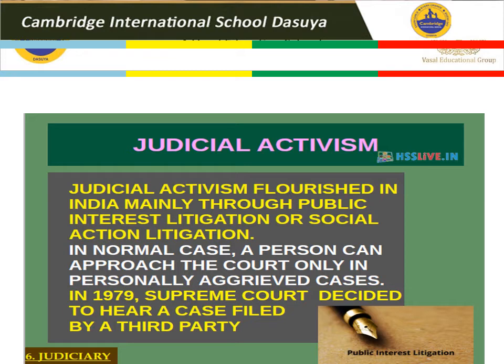What is PIL and what is SAL? You can find this topic on page number 135. In normal courts of law, an individual can approach the courts only if he or she has been personally aggrieved — that is, a person whose rights have been violated or who is involved in a dispute. Judicial activism flourished in India mainly through PIL or SAL. In 1979, the Supreme Court decided to hear a case filed by a third party.